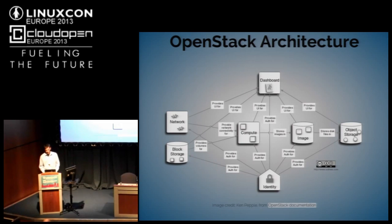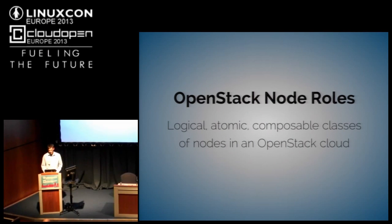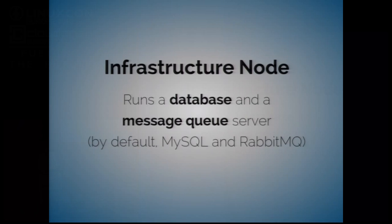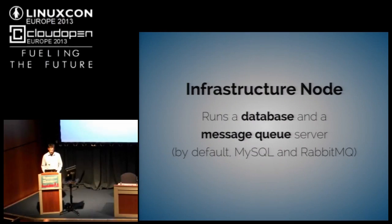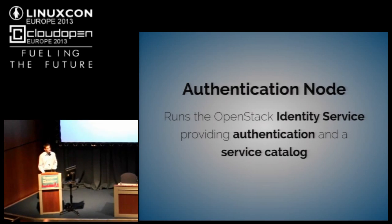From this logical overview of the OpenStack architecture follows the concept of node roles — logical, atomic, and composable classes of nodes. They're atomic because they're not broken down further. They're composable because it's common for a single node to have multiple roles. There is an infrastructure node, which runs a database and message queuing server. The relational database is normally MySQL, but Postgres is also supported. The message queue server is an AMQP server — most people use RabbitMQ, but Apache Qpid is also supported, as is ZeroMQ with some known limitations.